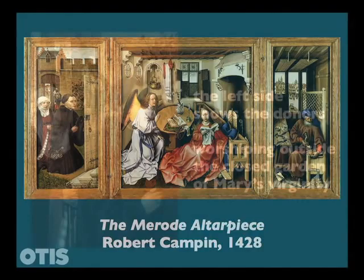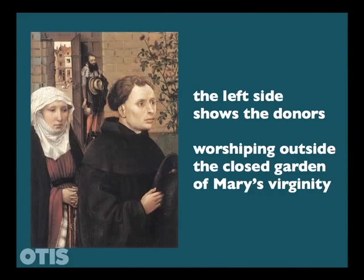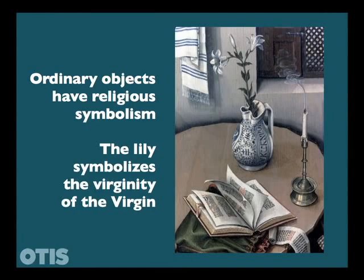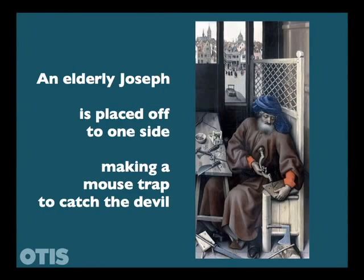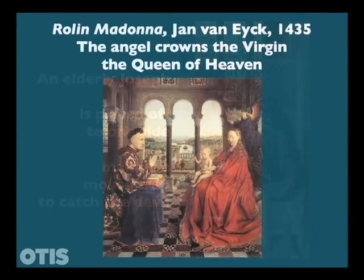On the left, the donors kneel before the door to Mary's home, surrounded by a wall seen in the background. The wall is the walled garden of Mary's chastity. The central panel symbolizes the Virgin's chastity through the white lily in a vase, while on the right panel her much older husband Joseph makes a mousetrap to catch the devil. Or does he?